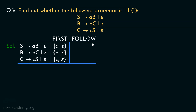Now for the follow sets. S is the start symbol, so FOLLOW(S) = {$}. B appears as the rightmost symbol in S → aB, so whatever follows S also follows B, giving FOLLOW(B) = {$}. C is the rightmost element in B → bC, so whatever follows B also follows C, giving FOLLOW(C) = {$}. Also, S appears as the rightmost element in C → cS, so S should also follow whatever follows C — which is dollar, already present in FOLLOW(S).